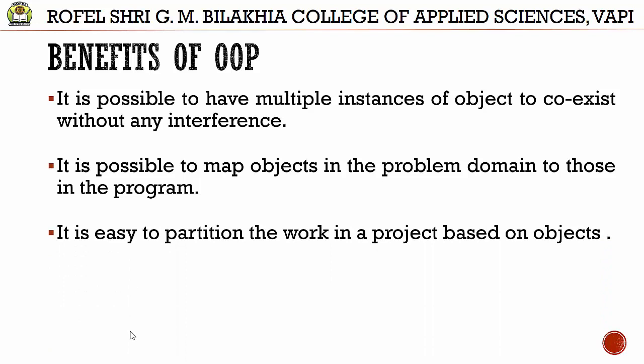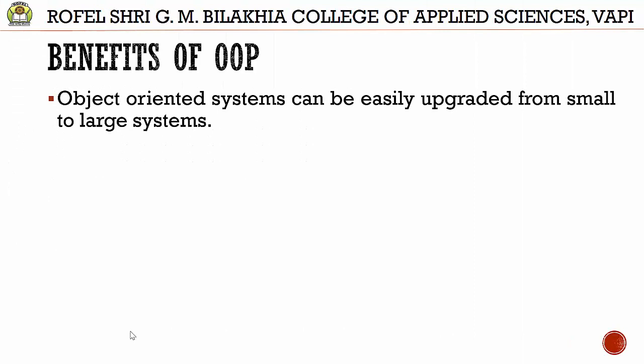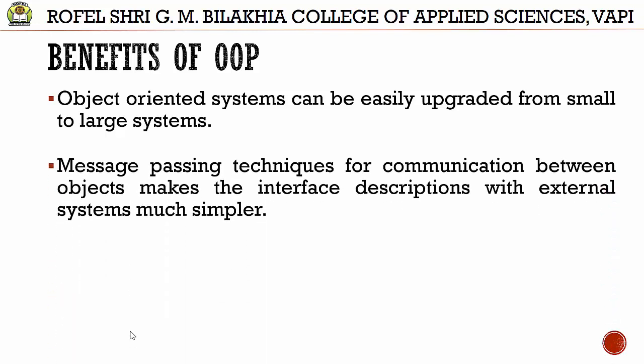It is also easy to partition the work in a project based on objects. For example, if we need to build a college software, we can create one class for students and one class for employees, and divide the work among developers — one developer works on the student class, another on the employee class. Additionally, object-oriented systems can be easily upgraded from small to large systems by adding more classes and functions.